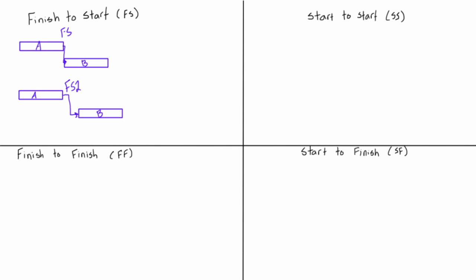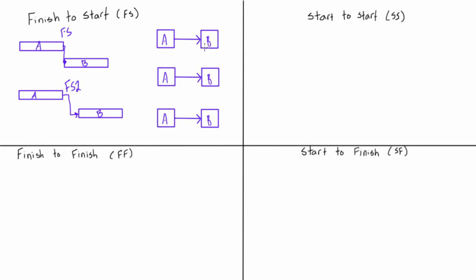There are a few different ways to draw this in a PDM network diagram. For a regular finish to start relationship, as we've been doing in previous examples, you can just draw an arrow — that gives you enough information to know that activity B can start once activity A is done. You can also technically write FS above the line, although it's pretty redundant because just an arrow with nothing above it means it's a finish to start relationship. But if you have a lag of two between these activities, then you would have to write FS2.